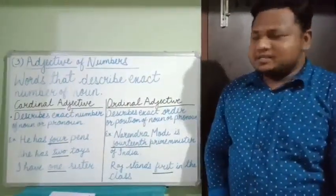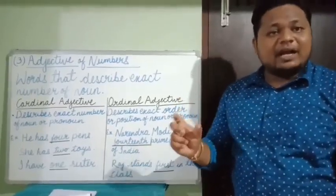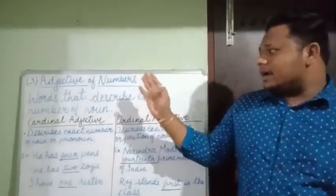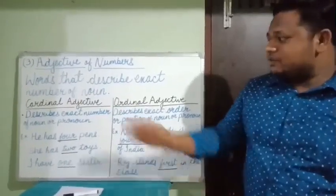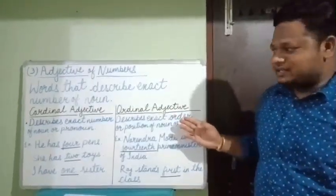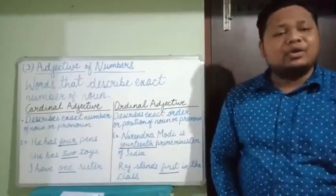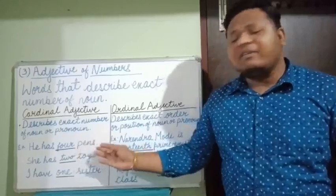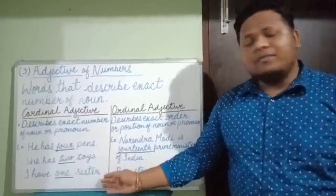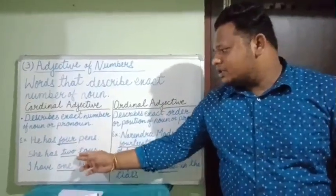Adjective of numbers — words that describe the exact number of a noun. Adjective of numbers is further divided into two types: cardinal adjective and ordinal adjective. The cardinal adjective describes the exact number of a noun or pronoun. For example: He has four pins. She has two toys. I have one sister. Here we have the exact figure about the noun — four, two, and one.